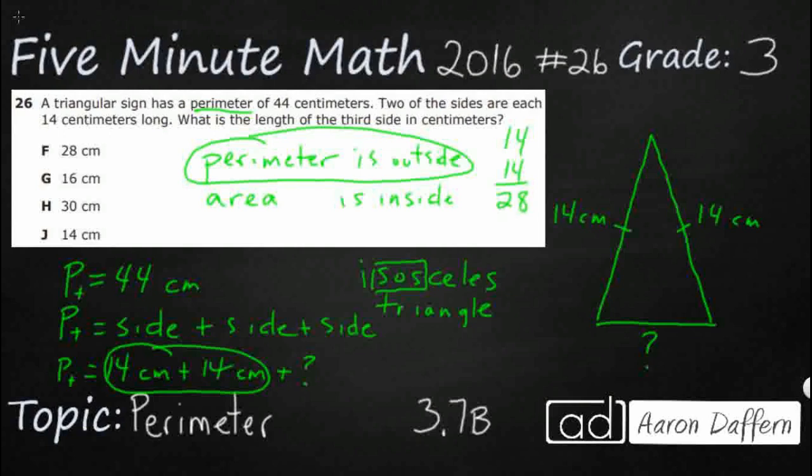Now take a look. 28 is an answer selection here, but that's just what two sides are. That doesn't show us what the third side is. So that's going to be a wrong answer, but it's a tricky wrong answer because it's sitting right there.